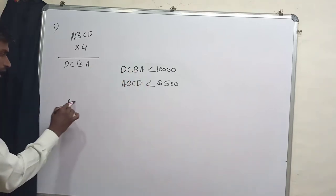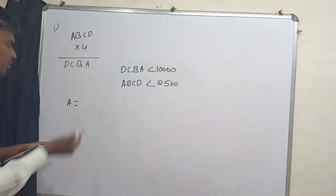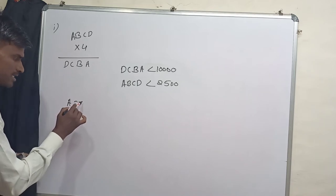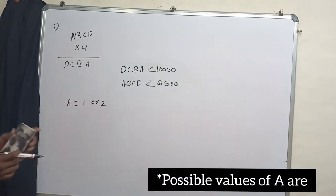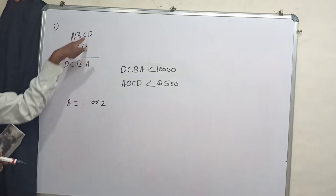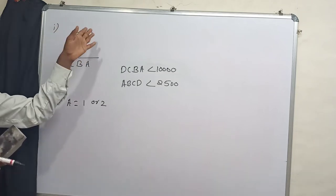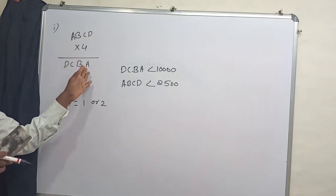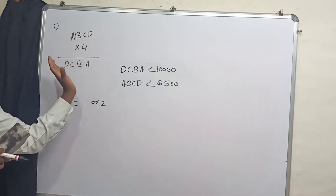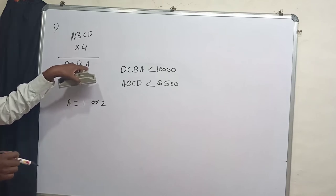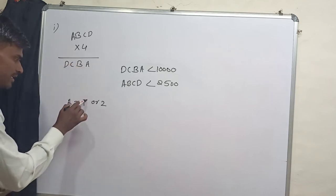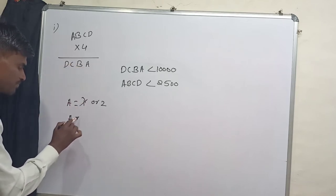So the values of A are, and also A can't be 0. So A is equal to 1 or 2 but we know that a multiple of 4, if you multiply any number with 4 you're going to get an even number. So since here A is in unit place, we can say that A equals 2.